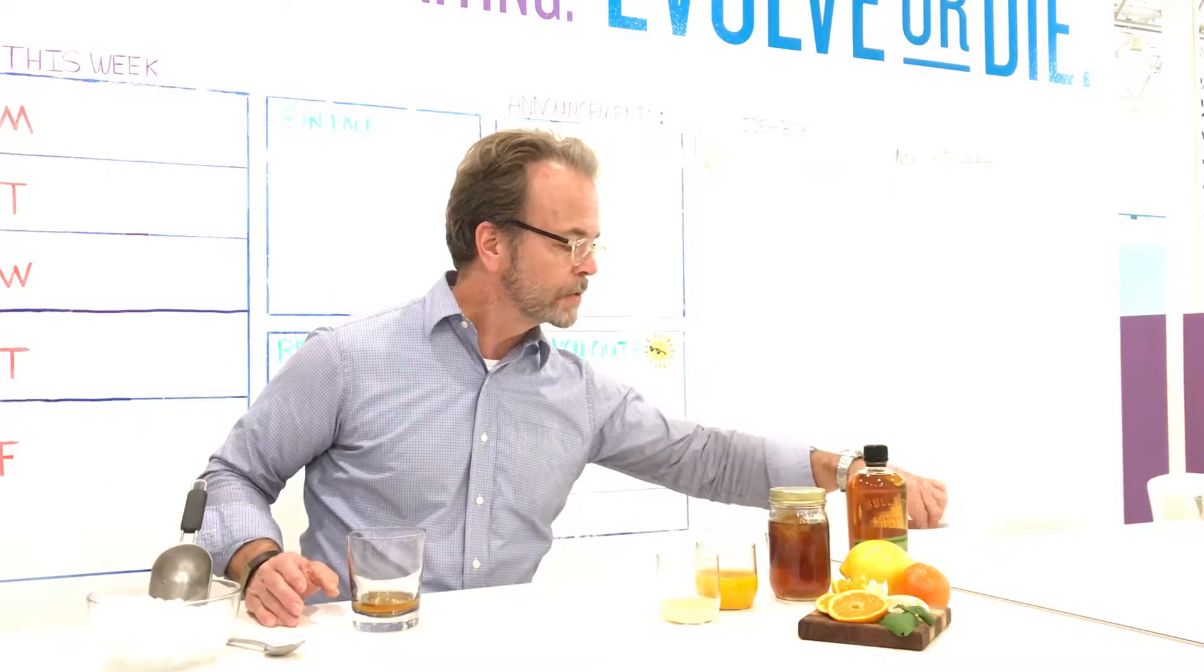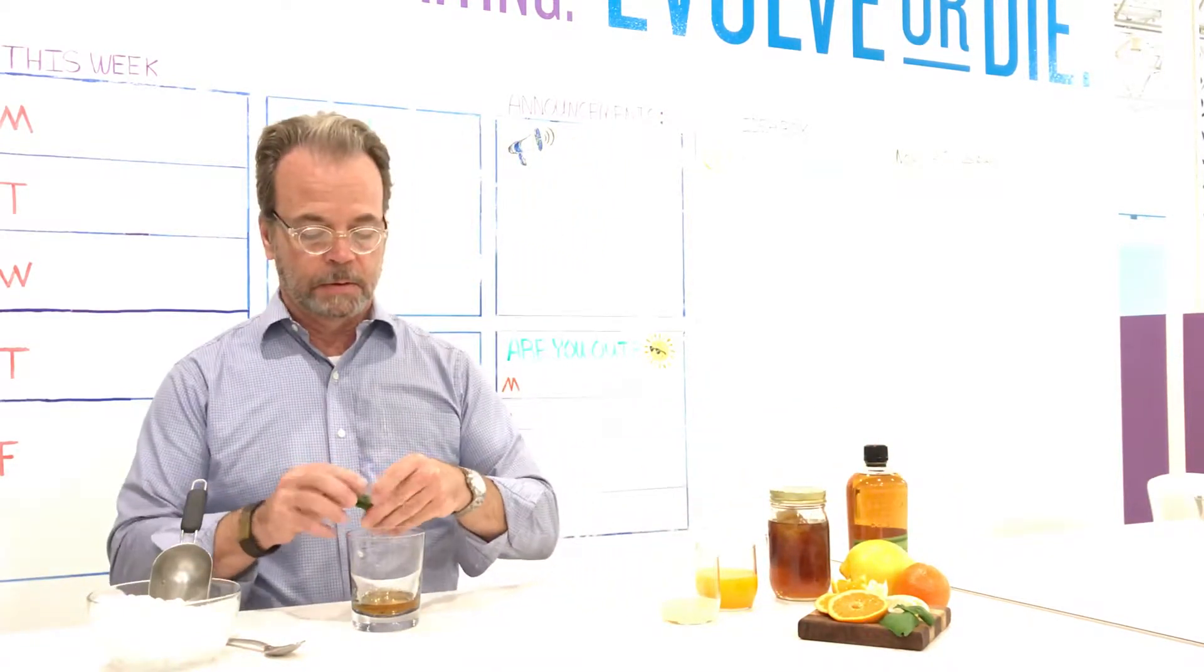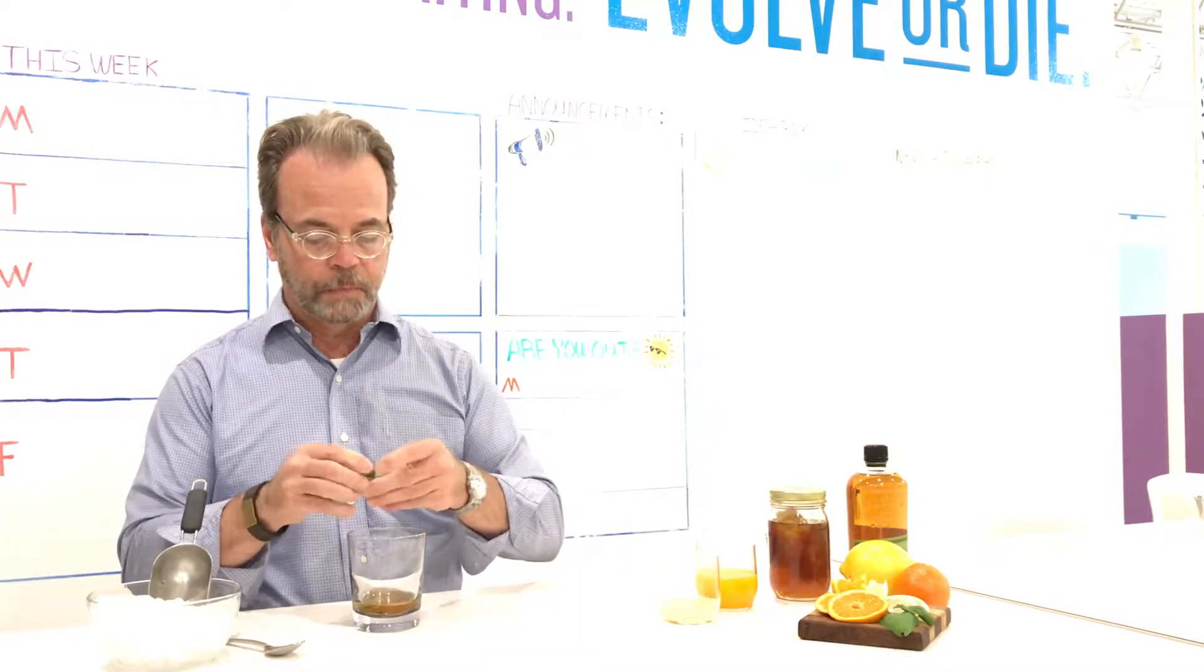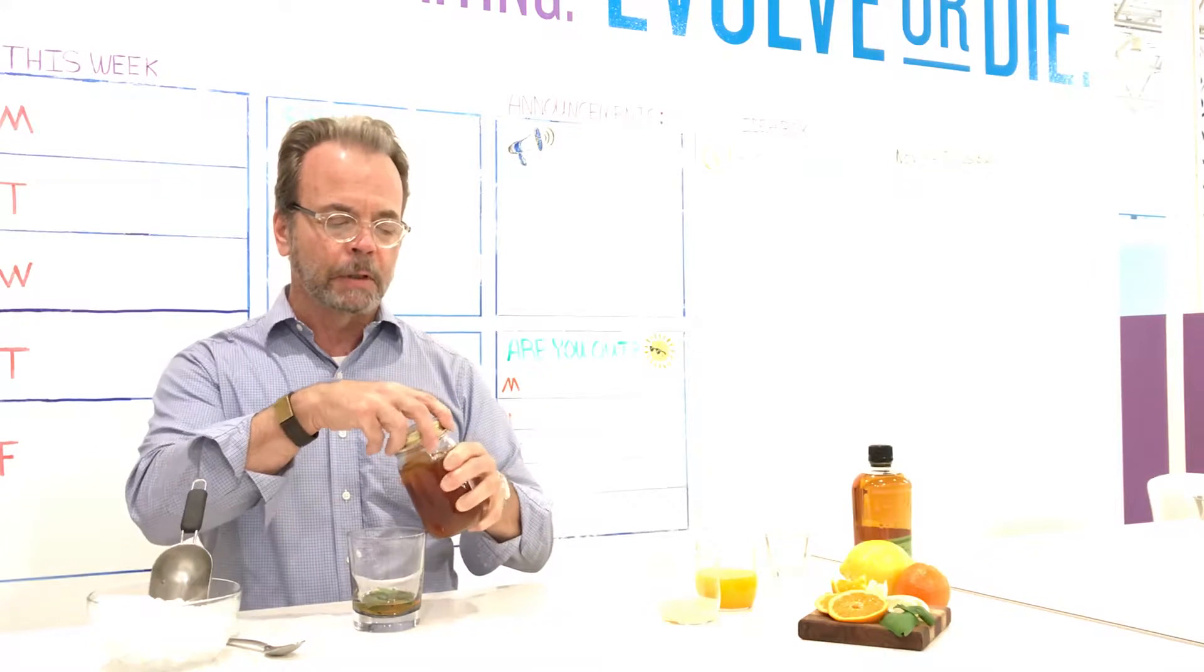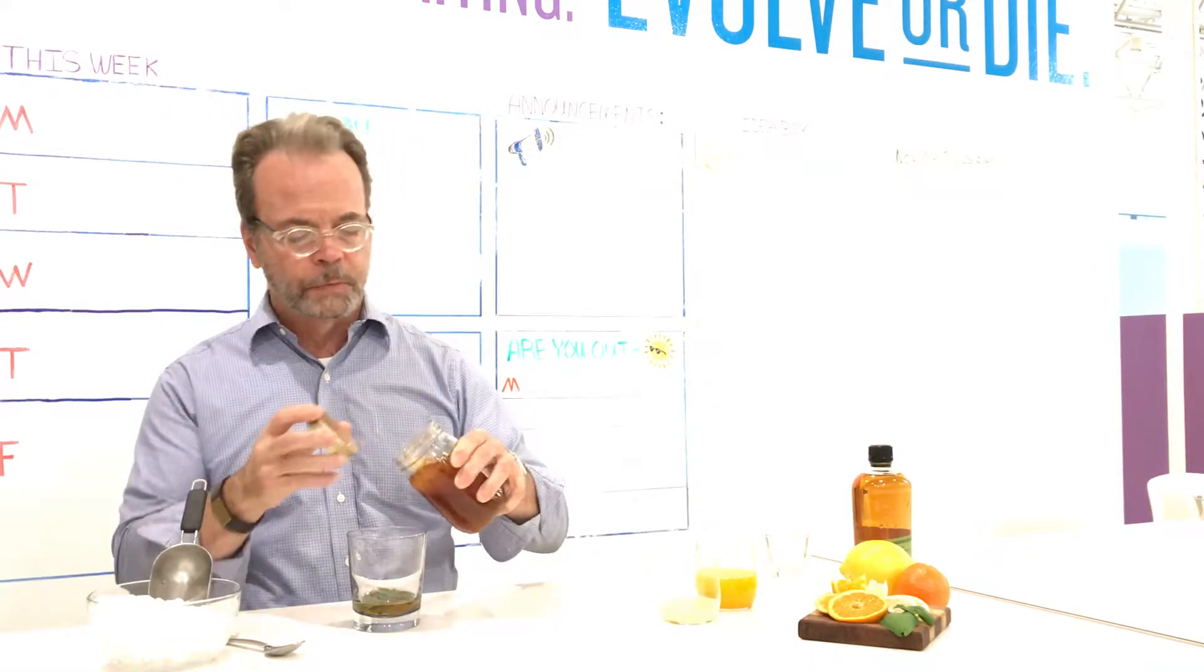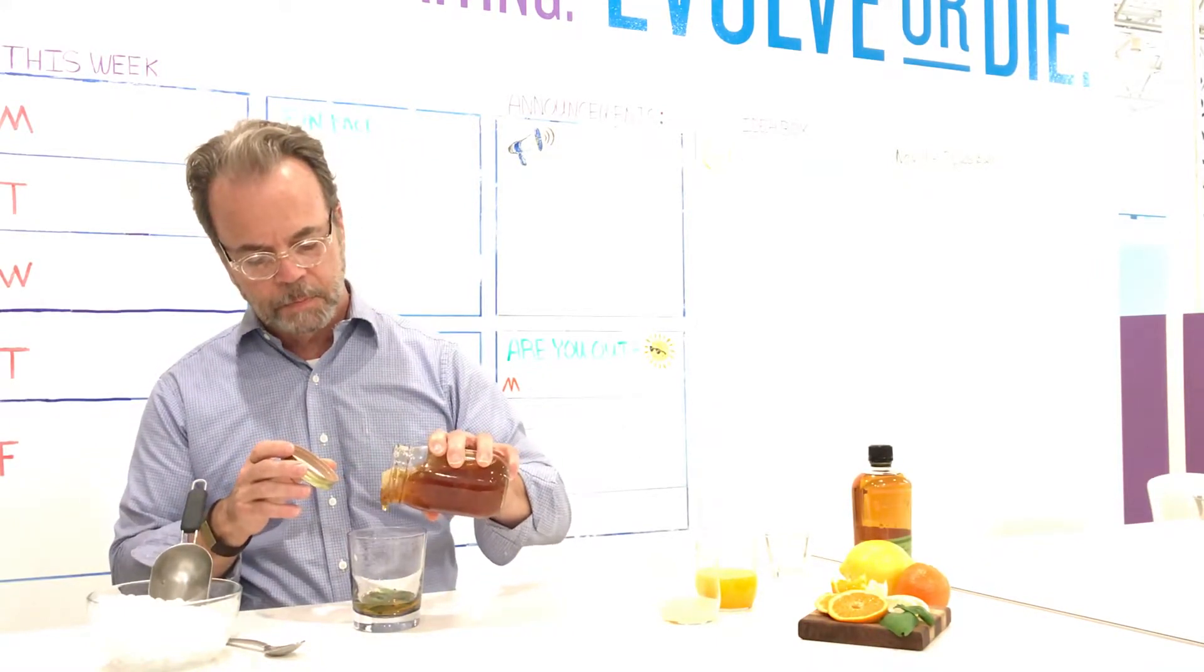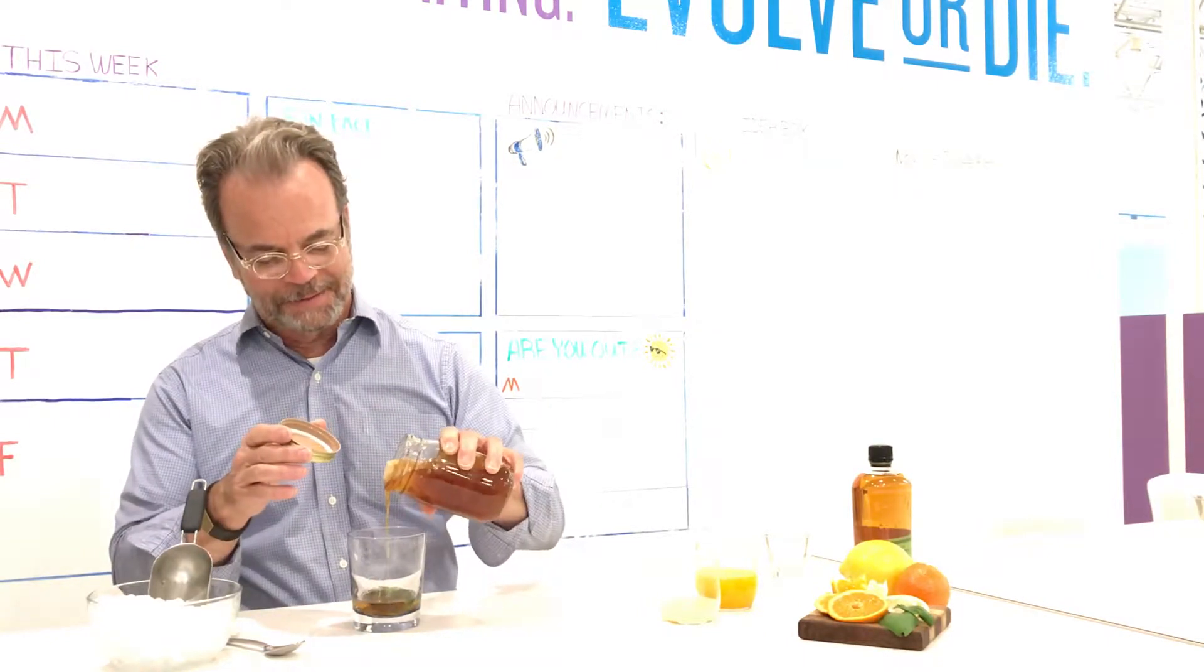A couple of leaves of basil, kind of tear them up. Put them in there. Some honey, maybe a tablespoon, two tablespoons to your taste. There we go.